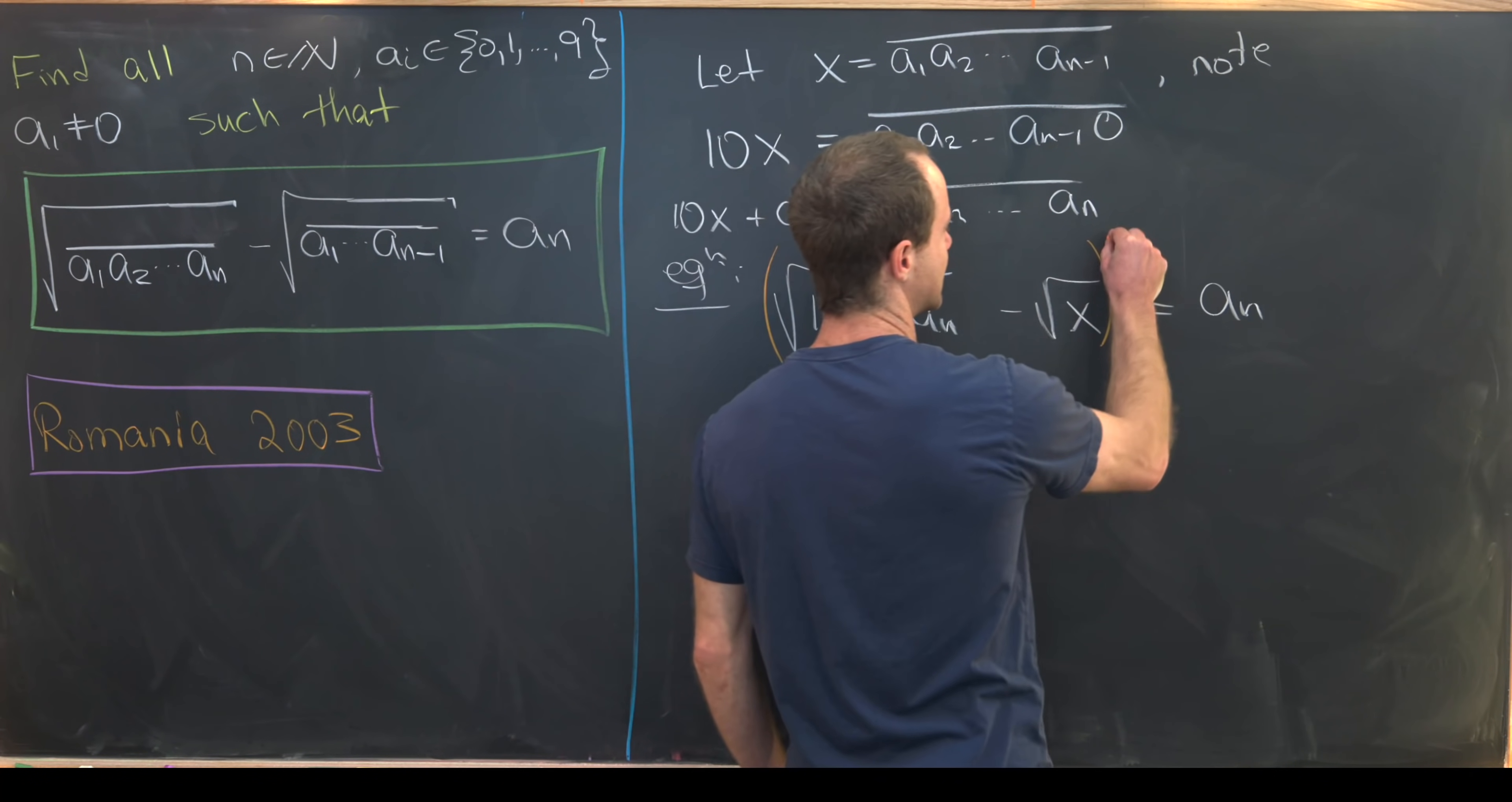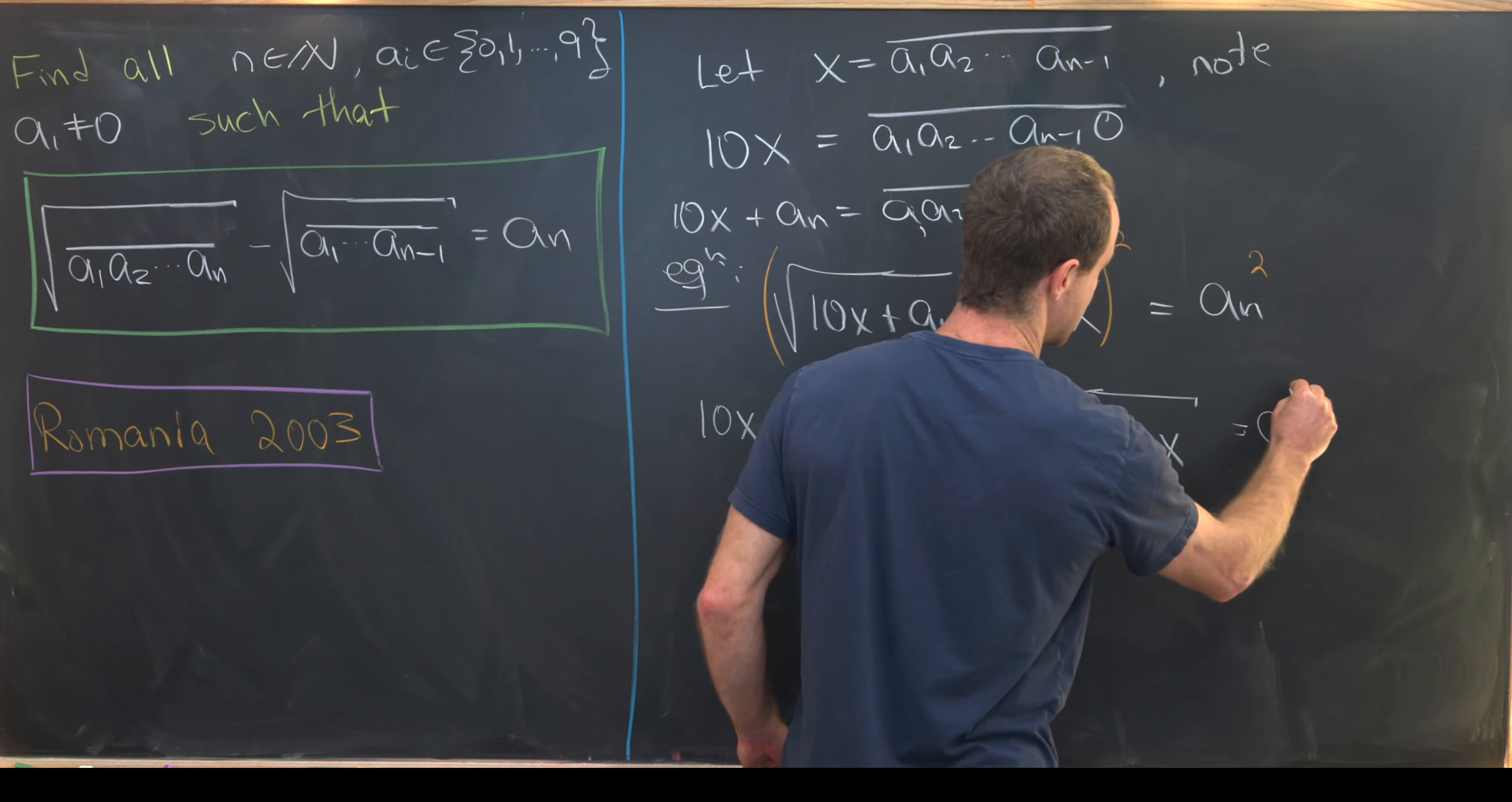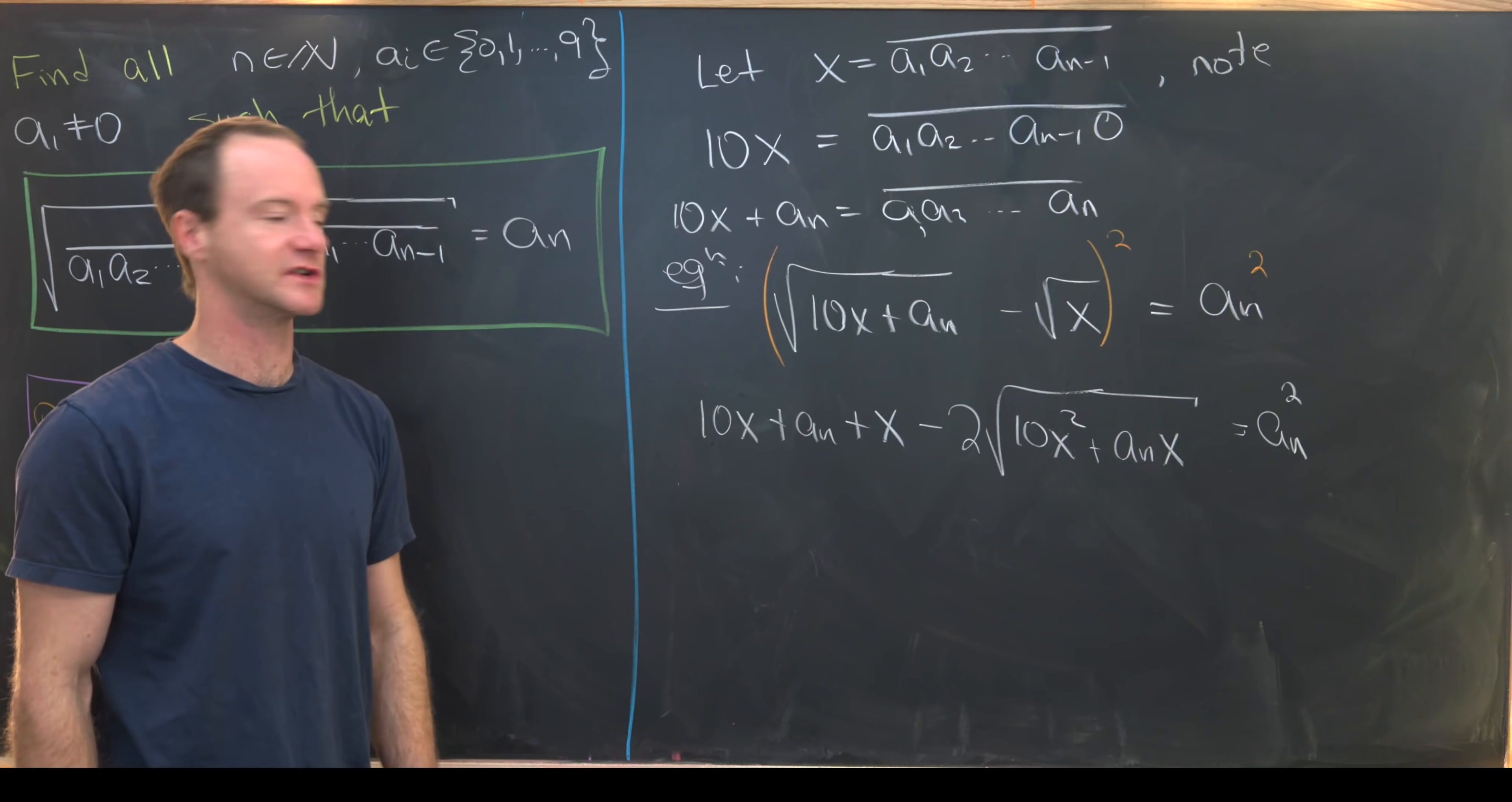So I'll start by squaring both sides of this equation, and that's going to give us 10x plus an plus x minus 2 times the square root of 10x squared plus an times x equals an squared like that. But now we can simultaneously combine some like terms. So this 10x and this x is a like term, while we move this equation around a little bit. So we probably like to move everything with the square root over to the other side.